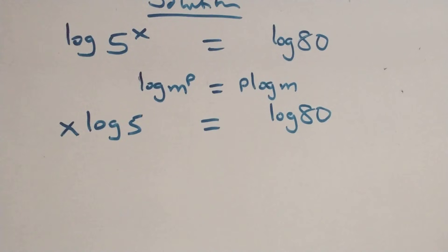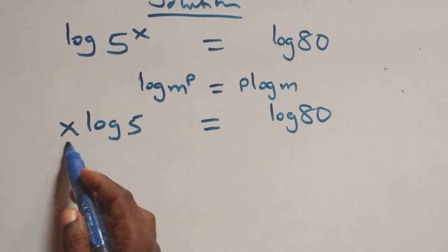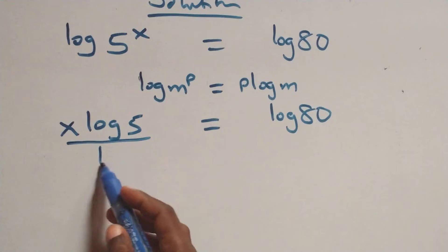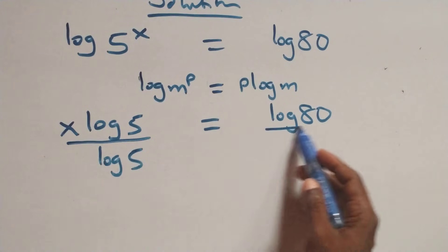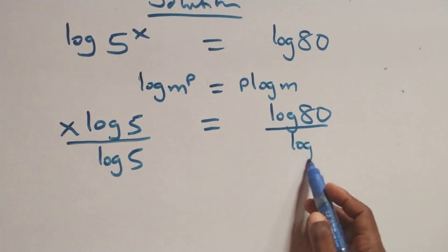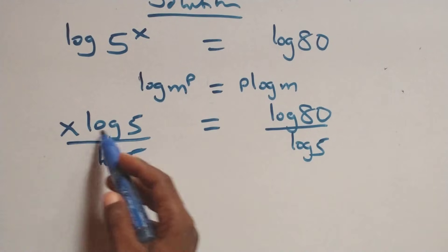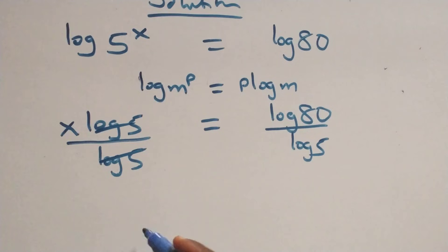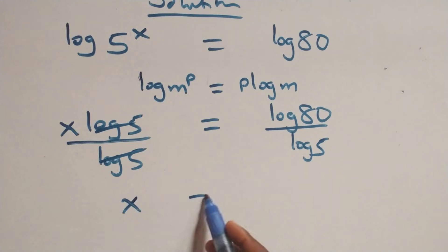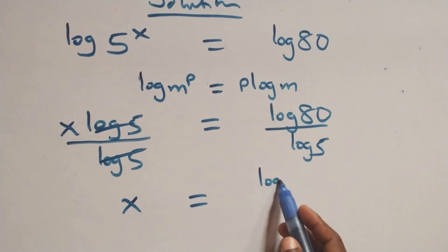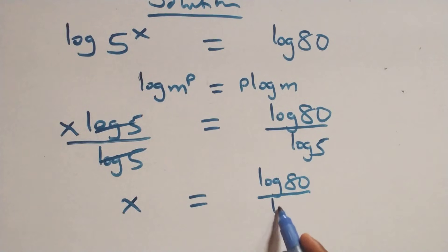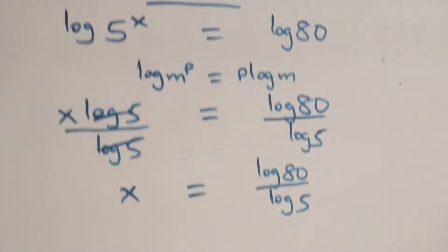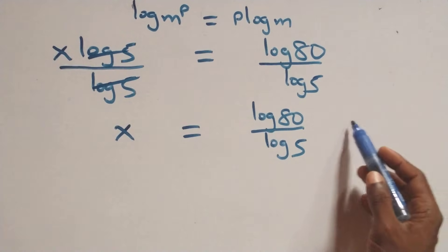The next step here: divide both sides by log 5. That is, divide this side by log 5, and also divide this side by log 5. Then here we have log 5 cancels with each other, and this becomes x equals to log 80 over log 5.